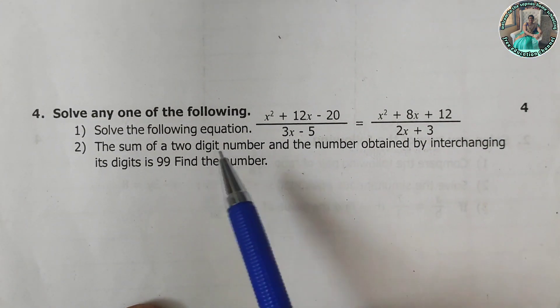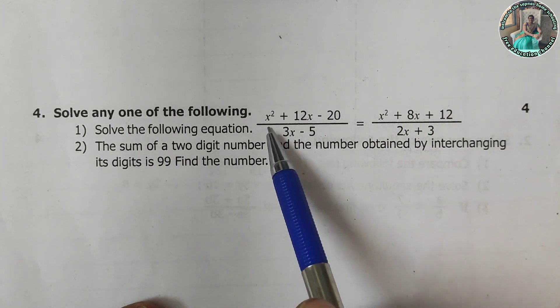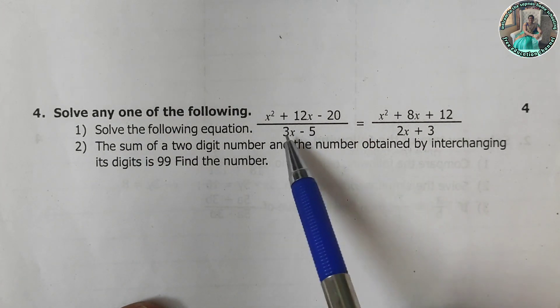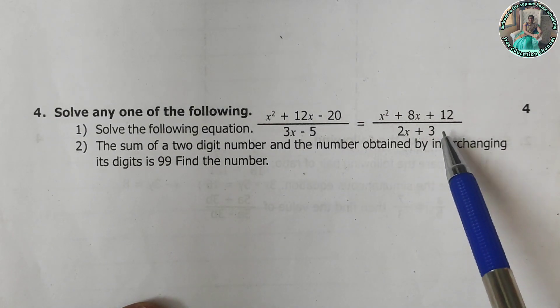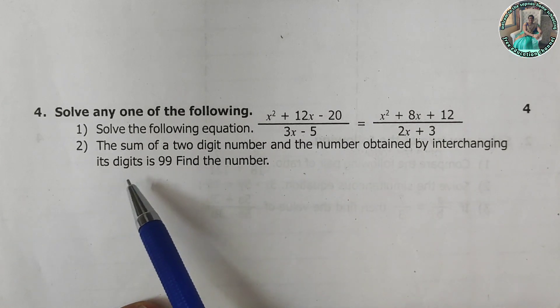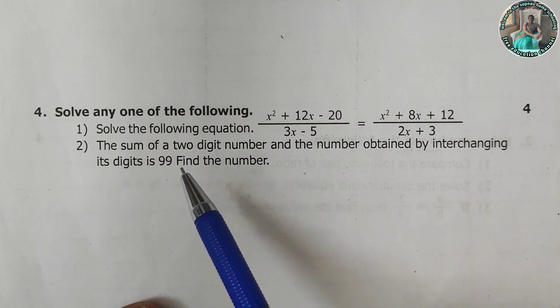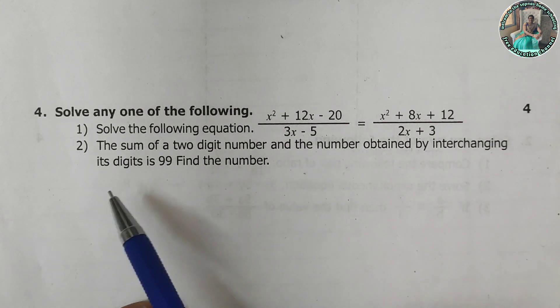Now the last question, solve any one of the following. So here, you have to solve the following equation: x square plus 12x minus 20 upon 3x minus 5, this is equal to x square plus 8x plus 12 upon 2x plus 3. Otherwise, you have to solve the another question. The sum of a two digit number and the number obtained by interchanging its digits is 99. Find the number.